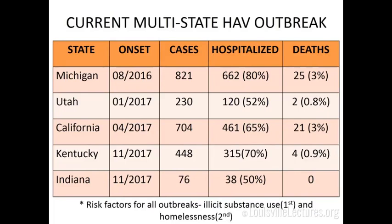There is a high rate of co-infection with hepatitis B and C in this outbreak. The co-infection rate locally was about three-quarters of patients being co-infected with either B or C or both. California's outbreak had a higher percentage of homeless compared to drug users. The death rate appears consistent with what would be expected for hepatitis A generally, though co-infected patients are known to do worse.